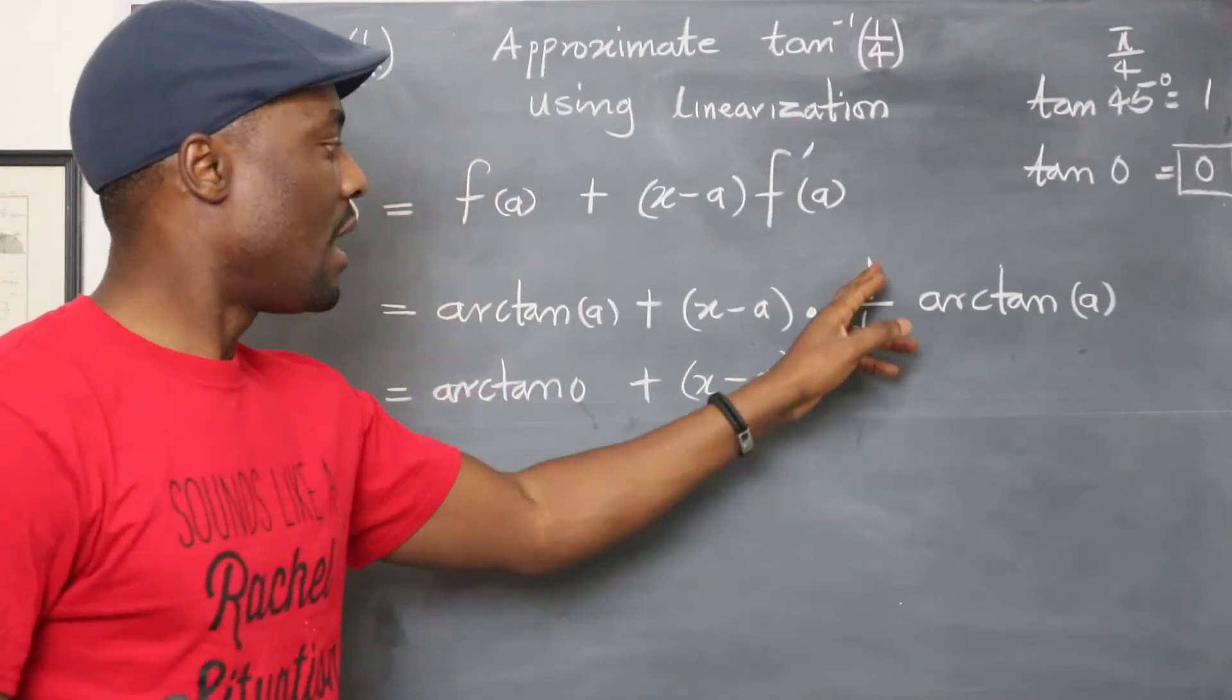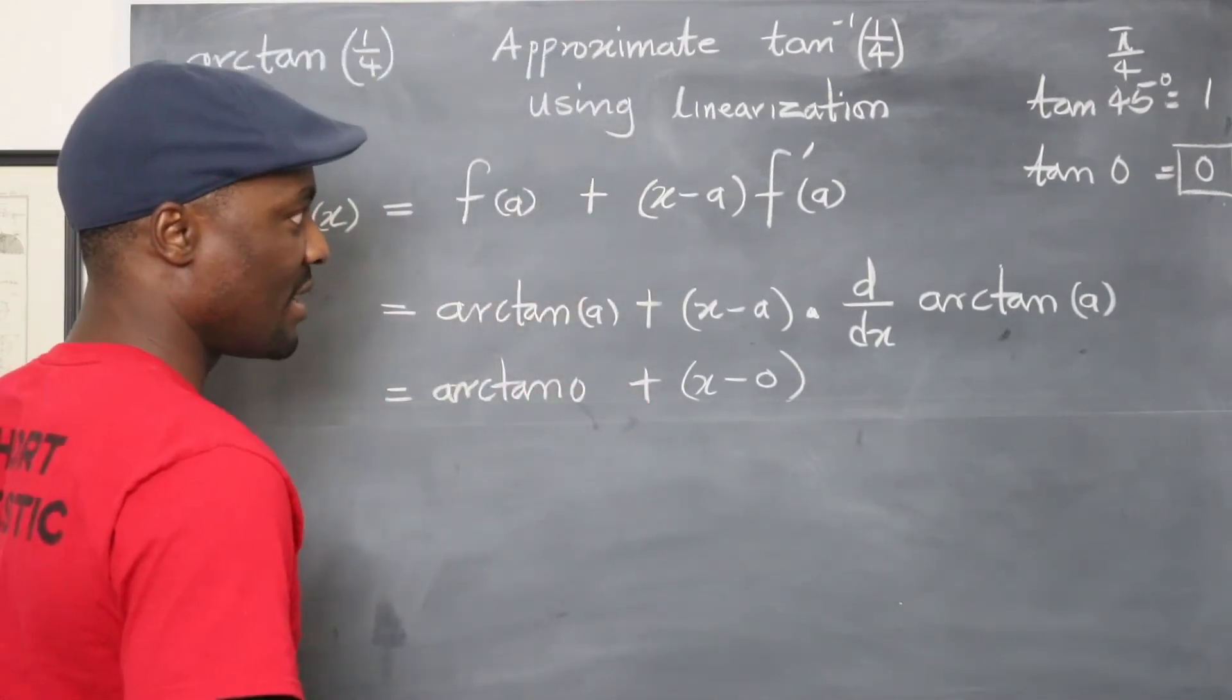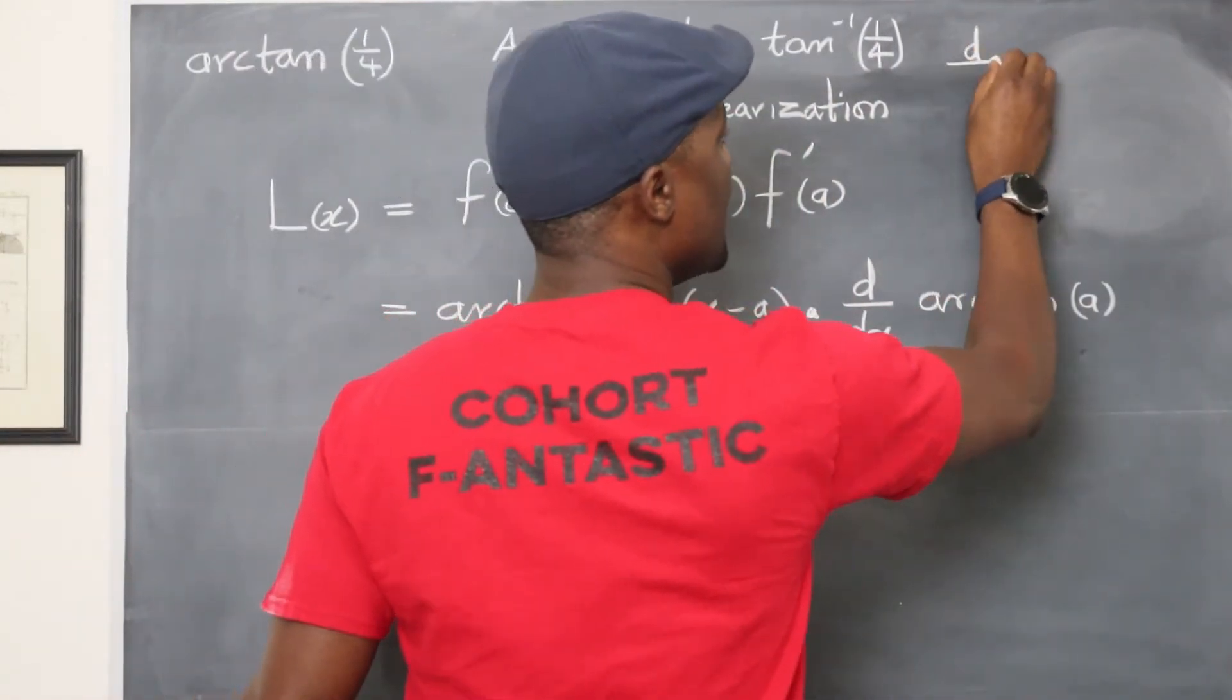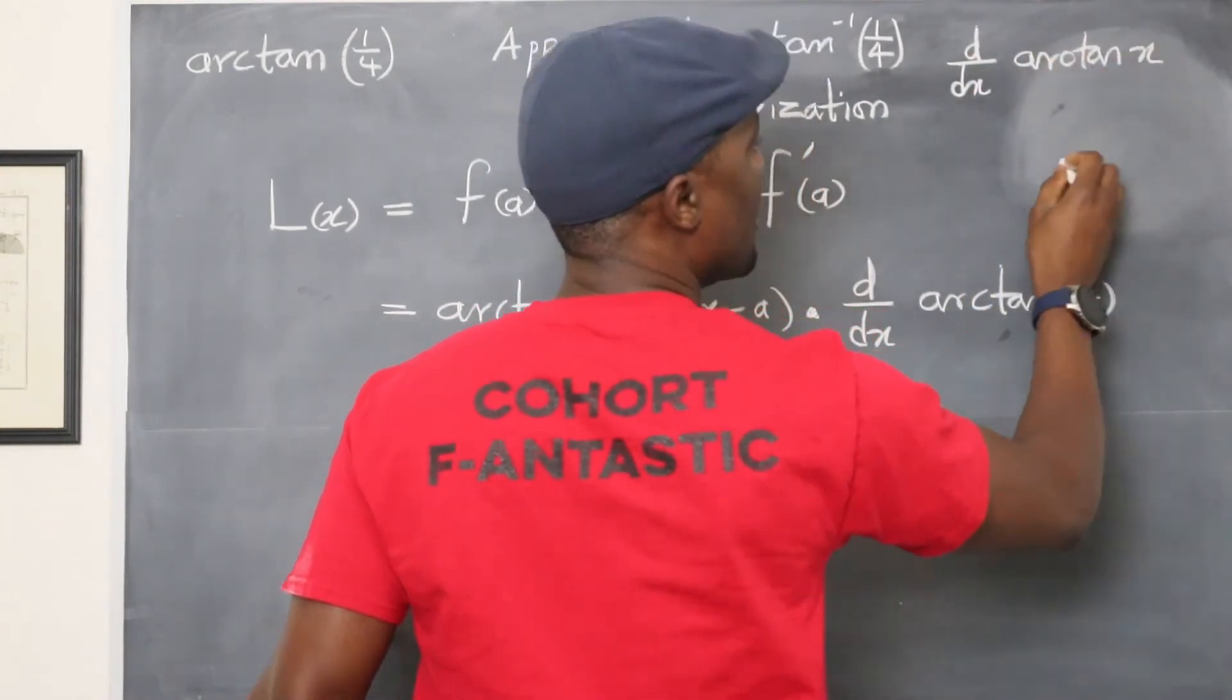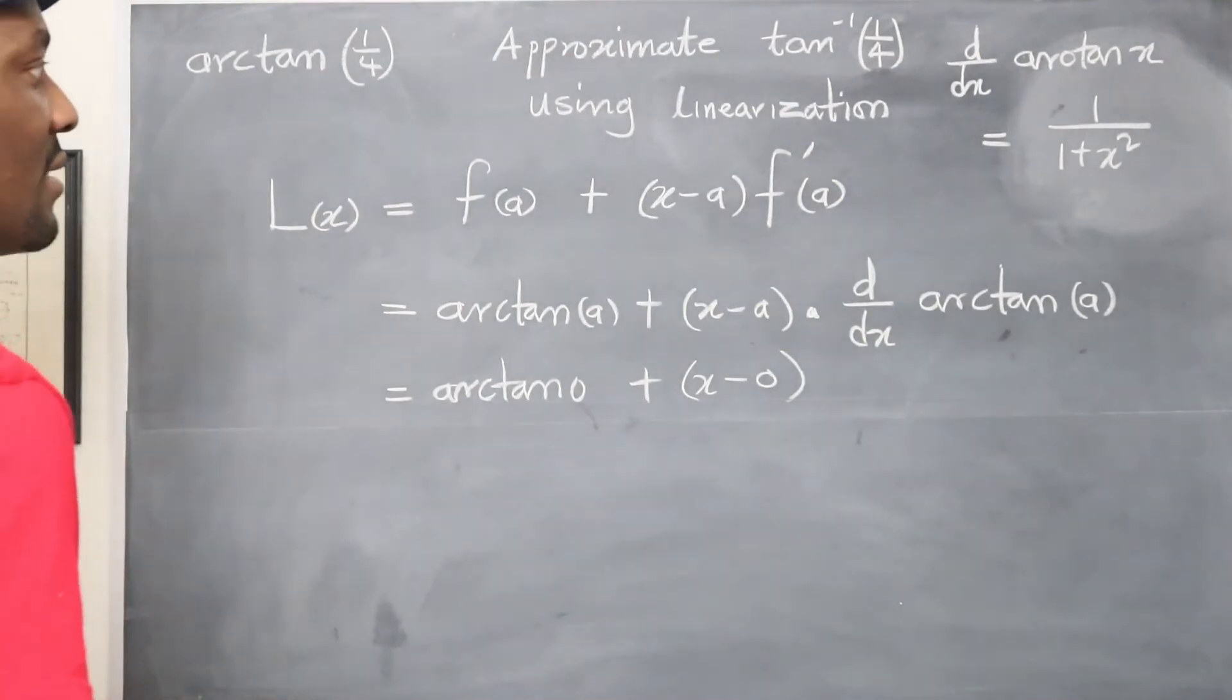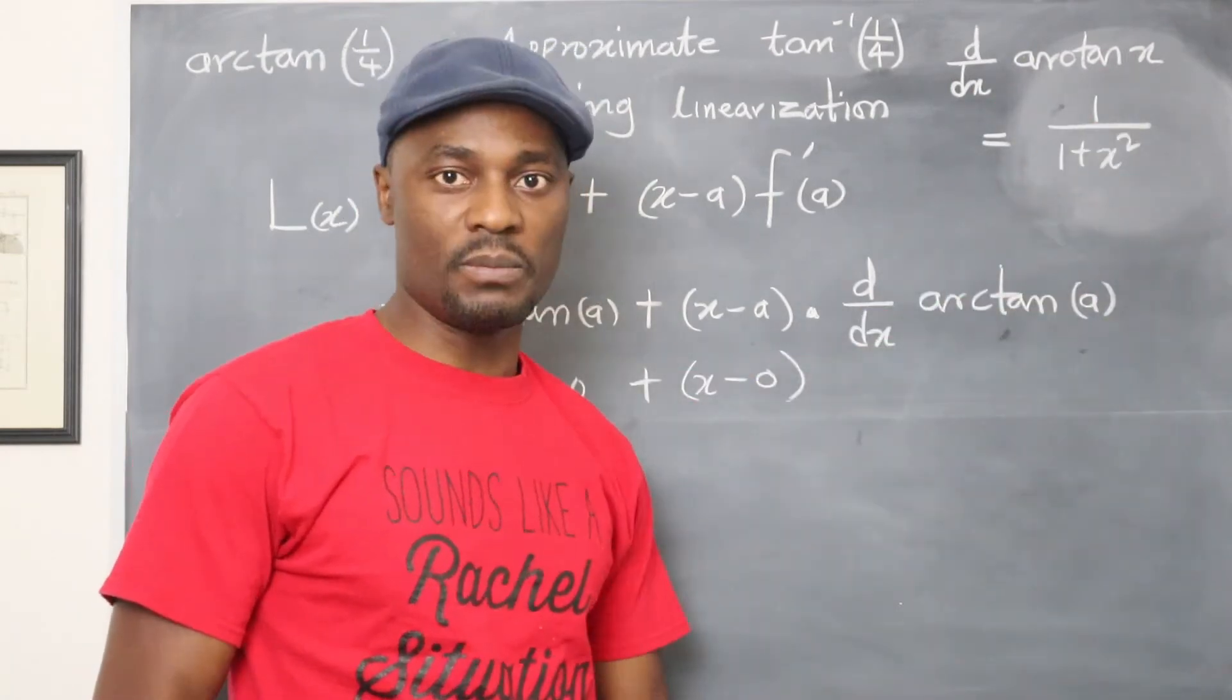So arc tan a will be arc tan zero plus x minus our a is zero. And d/dx of arc tan, well, when you differentiate arc tan, let me write it here. So if you have d/dx arc tan x, it will be equal to 1 over 1 plus x squared. That's the derivative of arc tan. That's something all calculus students are supposed to know.